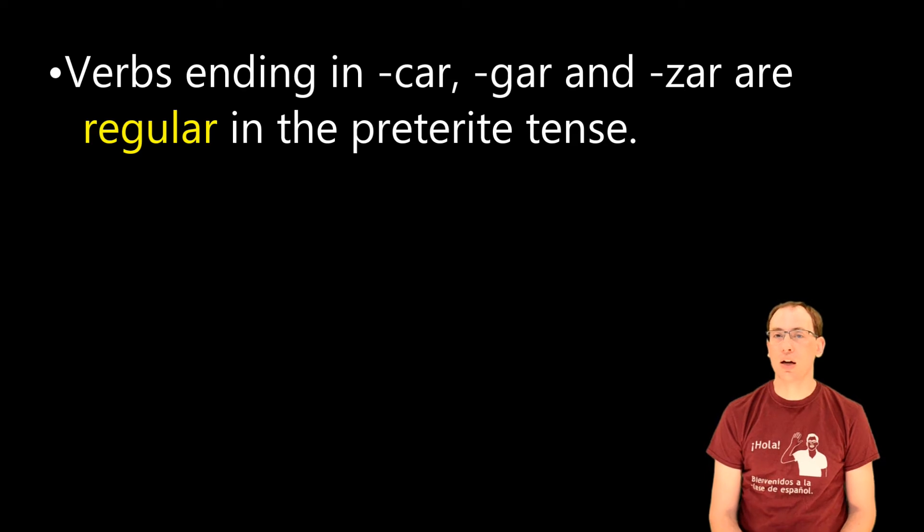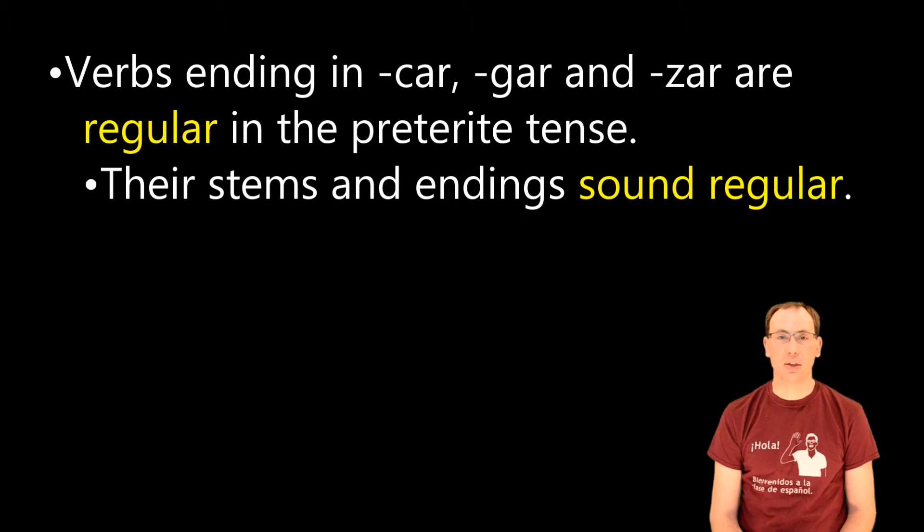Now the first thing to know about these verbs is that verbs ending in car, gar, and zar are regular in the preterite tense. Their stems and their endings sound regular. When we conjugate a verb in the preterite tense, we take that last sound, the AR, ER or IR, we get rid of it and we're left with the stem. We take the sound of the stem and then we add our preterite tense endings.